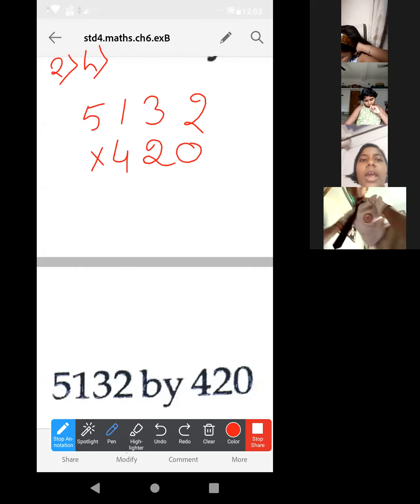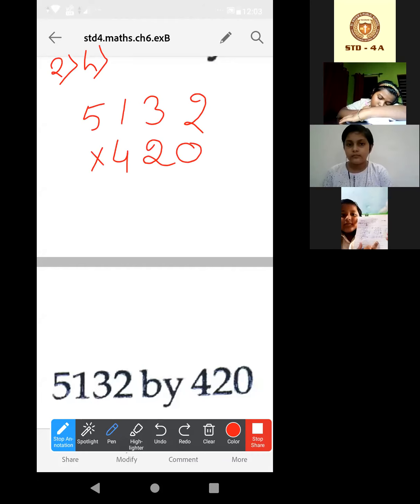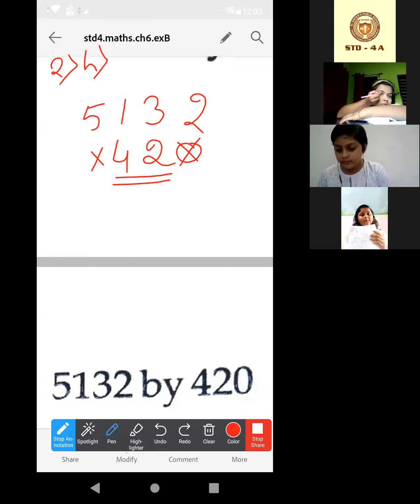One thing what you can do, as there is 0 in 420, okay, you can avoid this 0 and you can multiply it by 42. And after that at the end of the answer at the last you can put 1, 0. That thing also you can do. Understood?